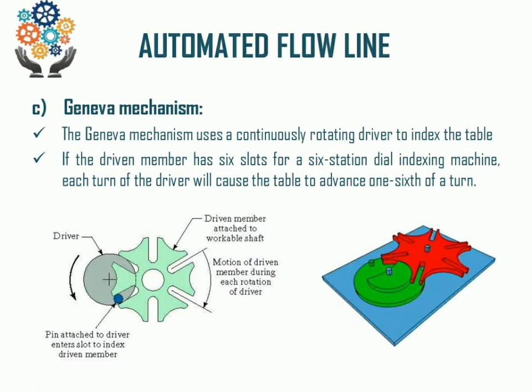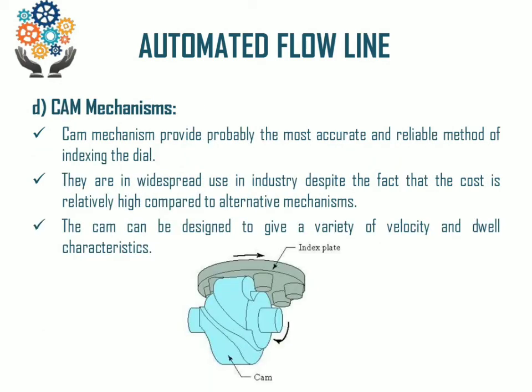That kind of mechanism is mostly used in bottling plants where beverage bottles get filled with liquid. The cam mechanism provides probably the most accurate and reliable method for indexing a table. The indexing table is mounted on a follower and the cam is placed inside the indexing table. When the cam moves in a particular direction, the indexing table moves in clockwise or anti-clockwise direction, forward or reverse.